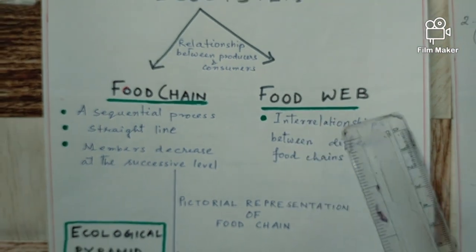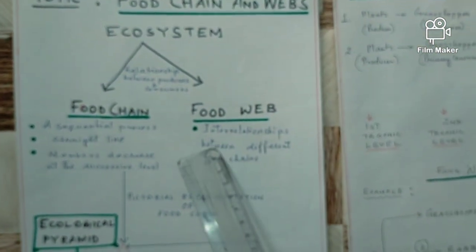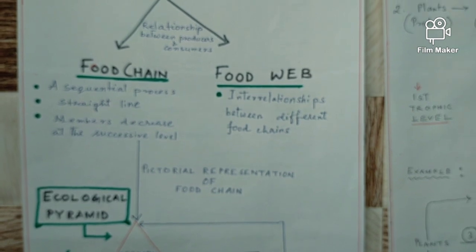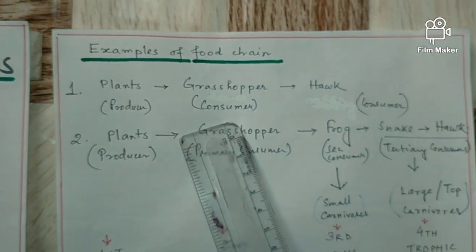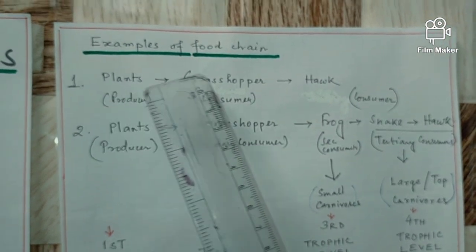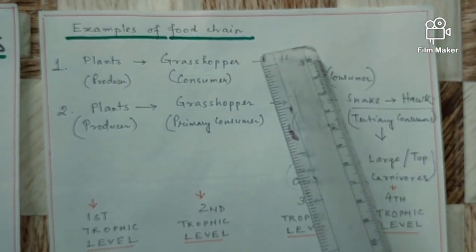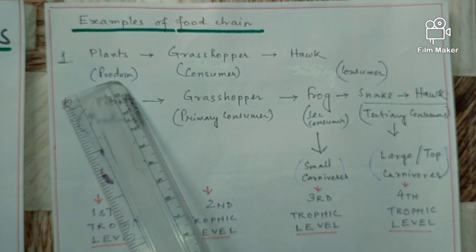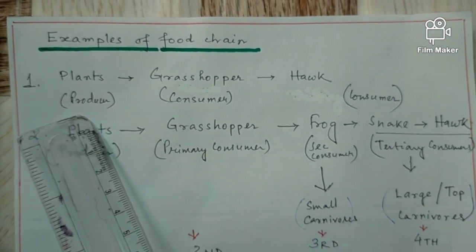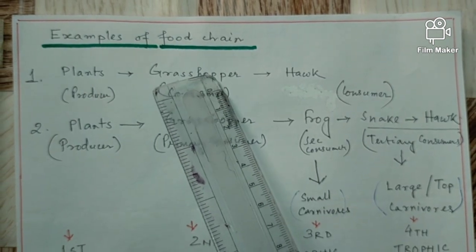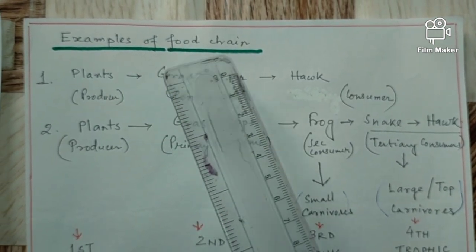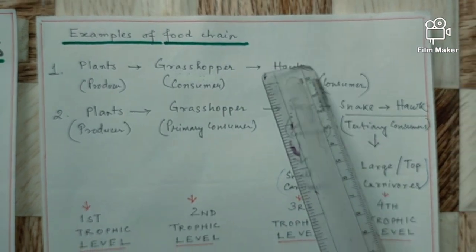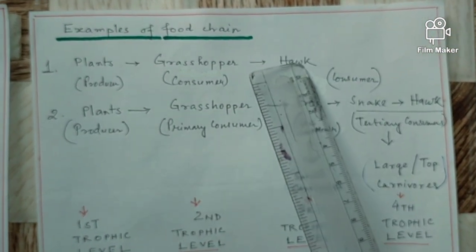The interrelationship between different food chains is termed as food wave. Now let us take one example of a food chain. Plants are eaten by grasshopper; grasshopper in turn is eaten by hawk. So here only three biotic levels are there. The first level is the plant, which is the producer level. It is eaten by the grasshopper, which is the primary consumer level. And grasshopper is eaten by the hawk, which is the top carnivore and also a consumer.